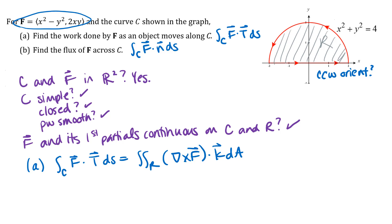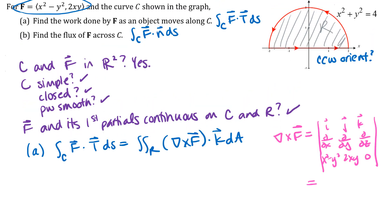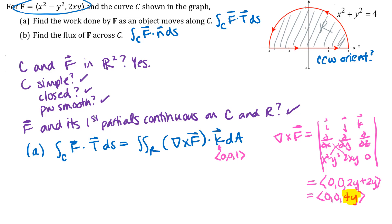We calculate the curl vector and then do the double integral. For a two-dimensional vector field, the i and j components of the curl vector are zero — it's just the K component that matters. Taking the partial derivative with respect to x of 2xy minus the partial derivative with respect to y of (x² − y²), we get 2x − (−2y), so the curl vector is (0, 0, 4y). Dotting with K gives us 4y.